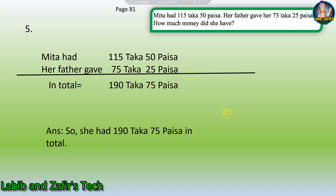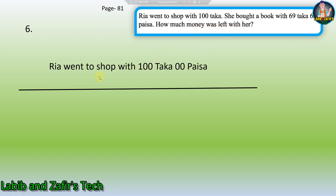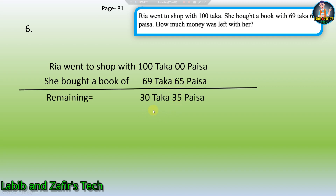Now let's go to our sixth word problem. Question: Riya went to the shop with 100 Taka. She bought a book with 69 Taka 65 Persha. How much money was left with her? Riya went to the shop with 100 Taka. Subtracting the cost of the book, the remaining amount is 30 Taka 35 Persha. Answer: 30 Taka 35 Persha was left with her.